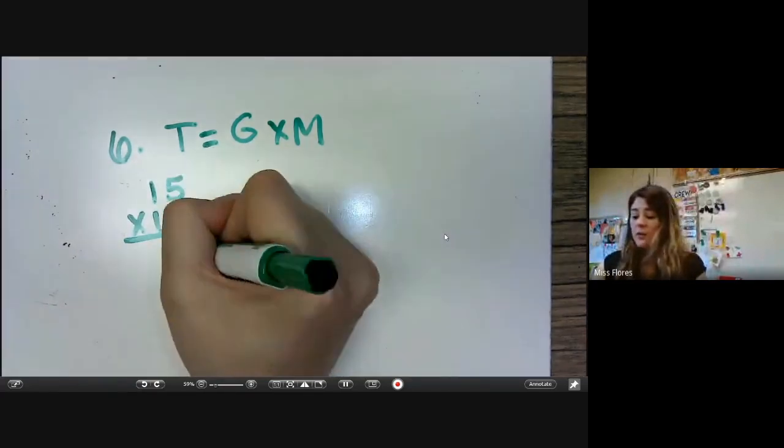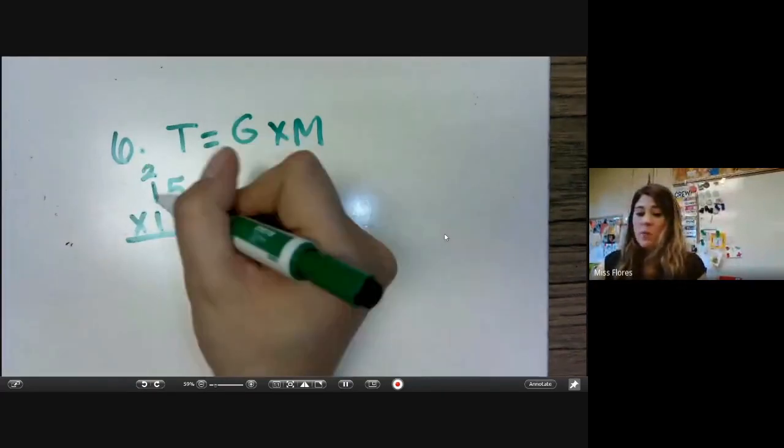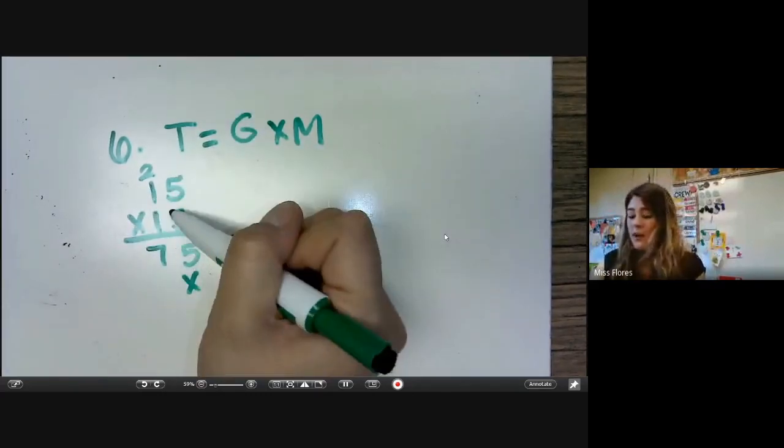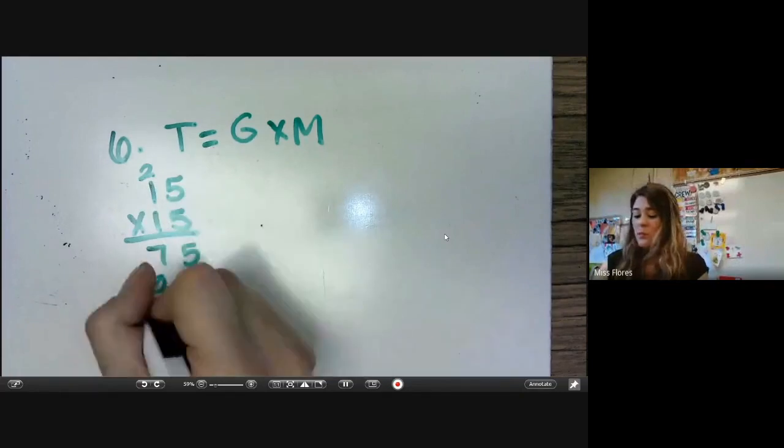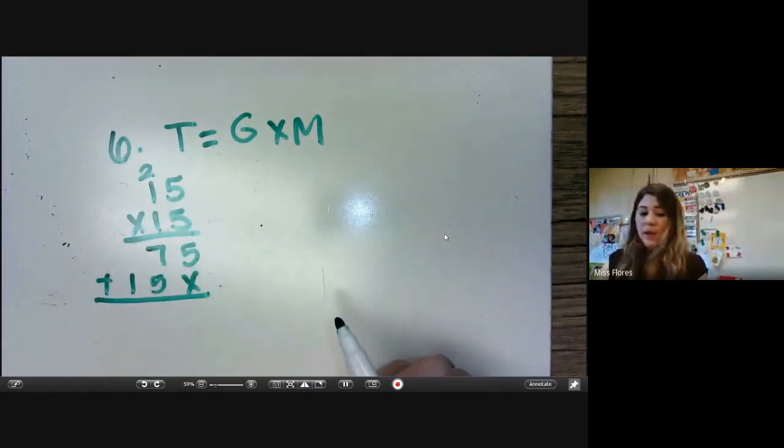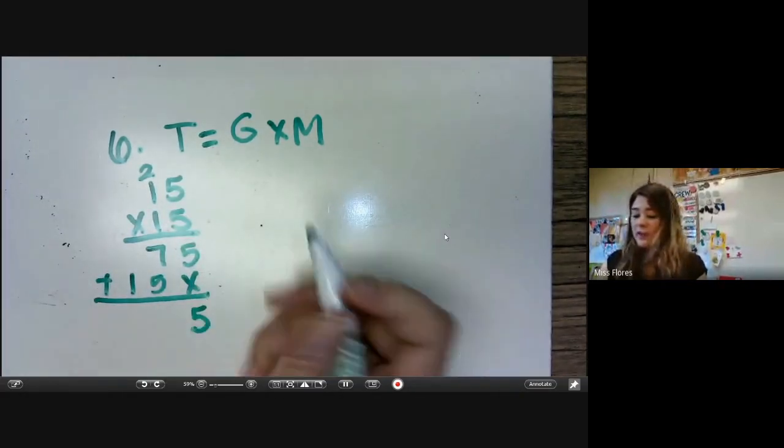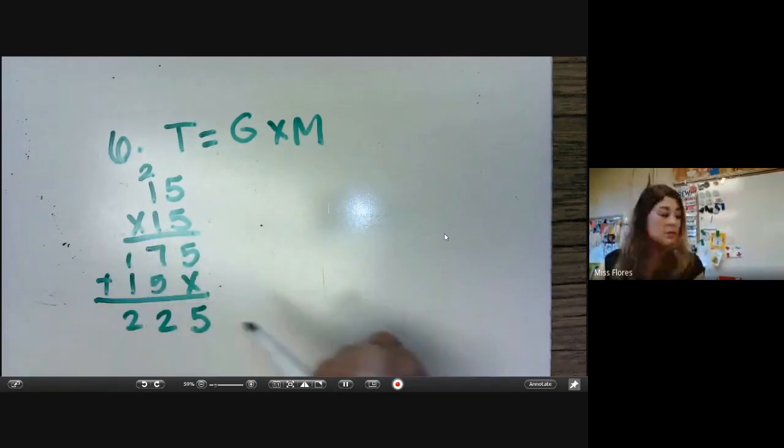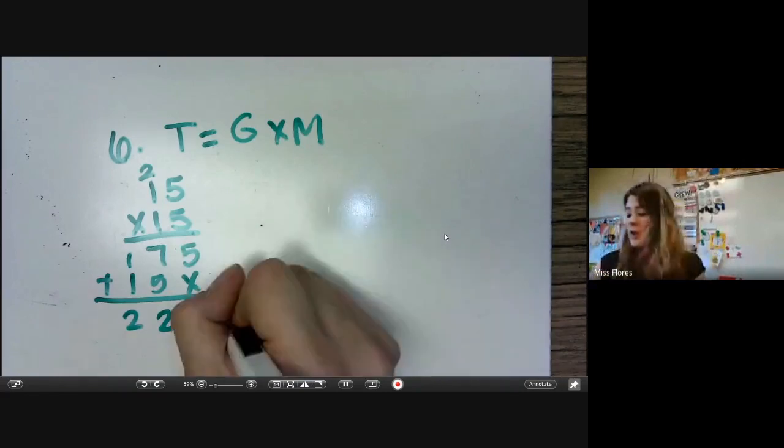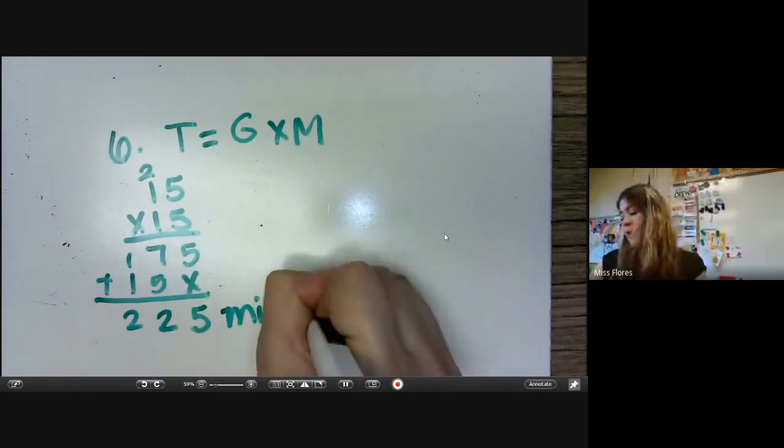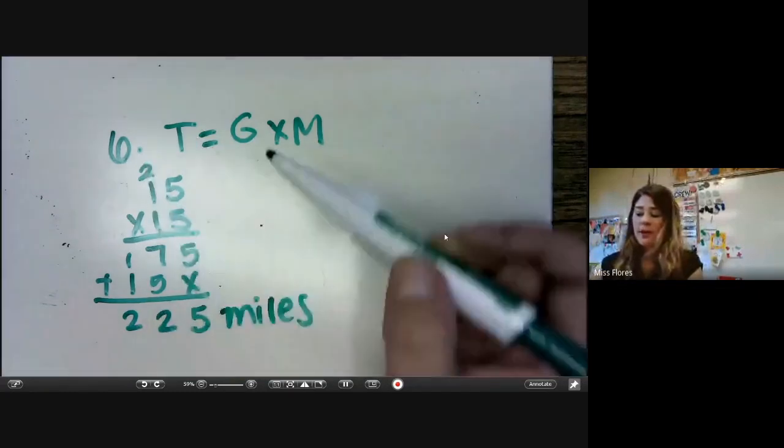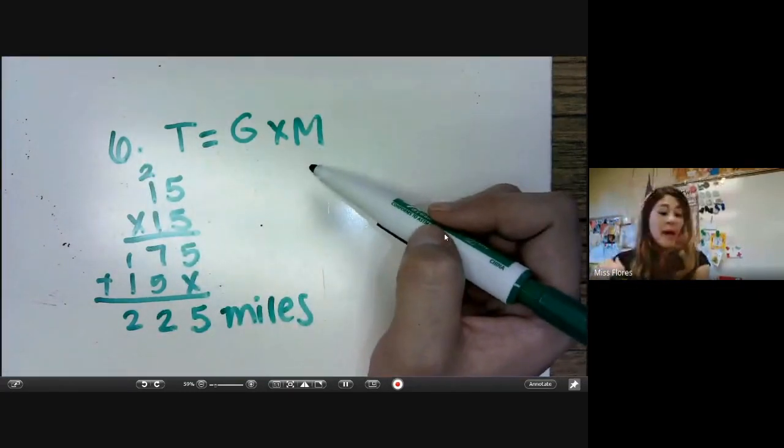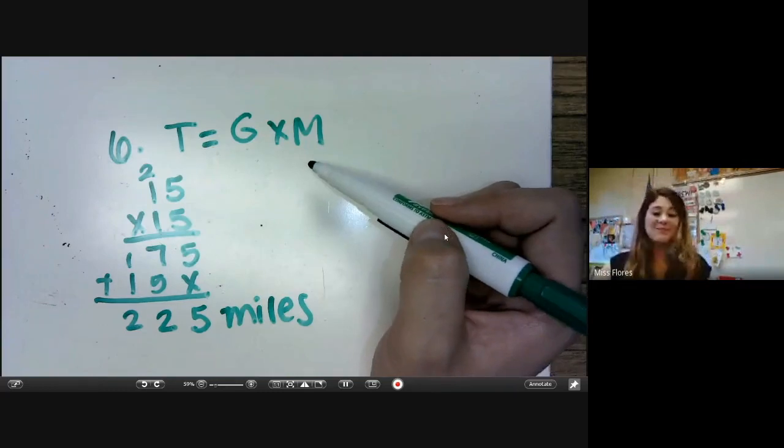Five times five is 25. Five times one plus two is seven. Five times one is five. And one times one is one. So then we add them together. We get five, we get 12, and two. So we have 225 miles. That's the distance they're going to go if they have 15 gallons and they have 15 miles per gallon.